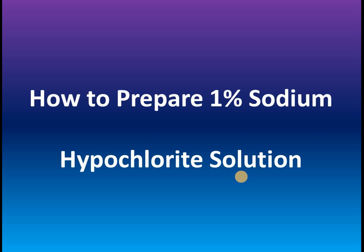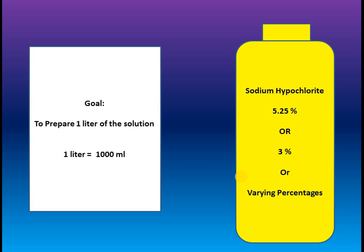We are going to learn about how to prepare a 1% sodium hypochlorite solution for disinfection. Our goal is to prepare 1 liter of the solution at 1% concentration. 1 liter is equal to 1000 ml, and we have sodium hypochlorite at 5.25%, 3%, or varying percentages above 5.25%, which is used for domestic purposes.